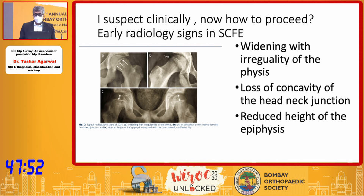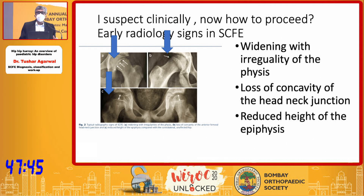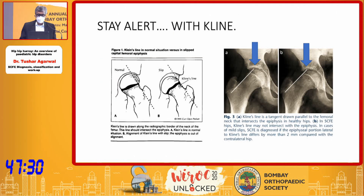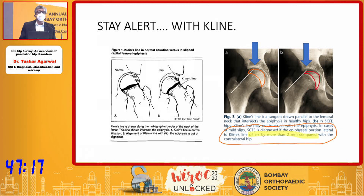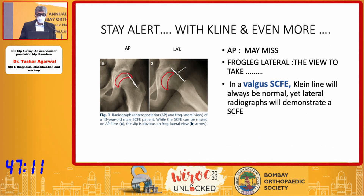We will obviously do the hip pelvis with both hips AP first. There are three signs to look for. A very obvious SCFE — a severe slip — is obvious to all, but it is the subtle slip which is difficult to pick up. You require to see a widening or irregularity in the physis, a loss of concavity of the head-neck junction, and a reduced height of the epiphysis. The most famous sign is Klein's line — you draw a line parallel to the superior neck and find that the CFE is slipping out of the Klein's line. If it has not slipped out completely, compare it to the opposite side; it should not differ by more than 2 millimeters.